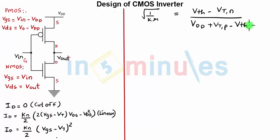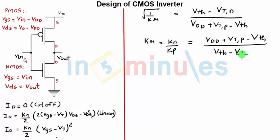When I square it and get the equation in terms of KR what I get is KR equal to KN by KP which in turn is equal to (VDD plus VTP minus switching threshold) upon (switching threshold minus the threshold voltage of NMOS transistor), this is the whole square.